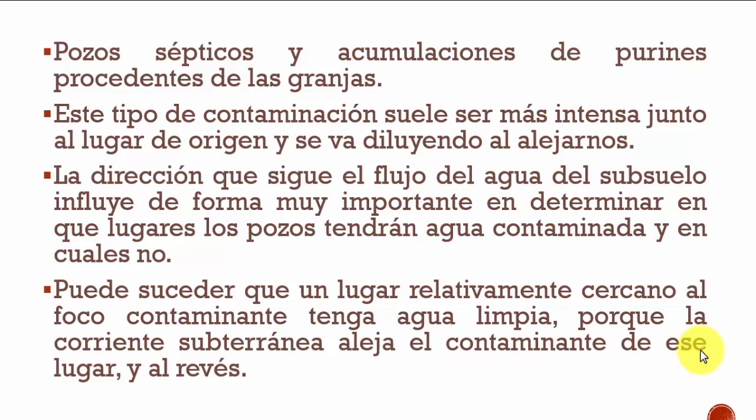Otros puntuales son los pozos sépticos y acumulaciones de purín procedentes de las granjas. Este tipo de contaminación suele ser más intensa junto al lugar de origen y se va diluyendo al alejarnos. La dirección que sigue el flujo del agua del subsuelo influye de forma muy importante en determinar en qué lugares los pozos tendrán agua contaminada y en cuáles no. Puede suceder que un lugar relativamente cercano al foco contaminante tenga agua limpia porque la corriente subterránea aleja el contaminante de ese lugar, o también puede suceder el efecto contrario.